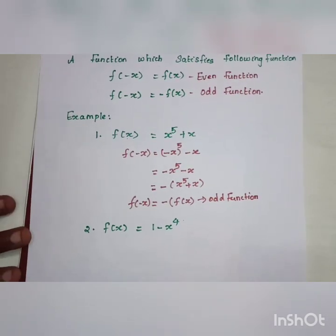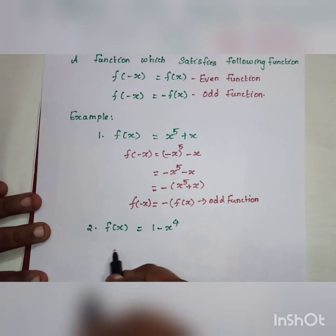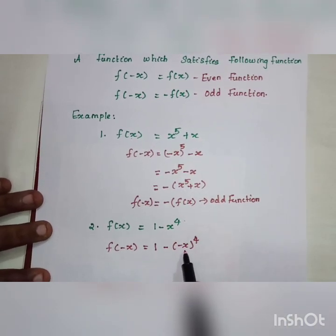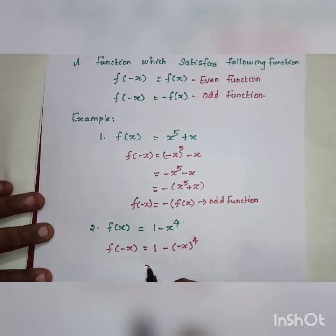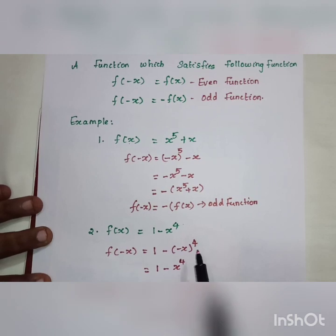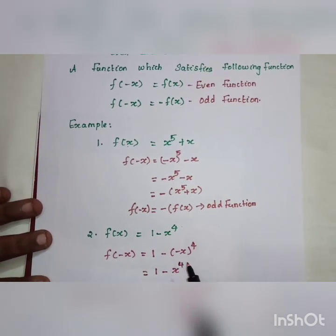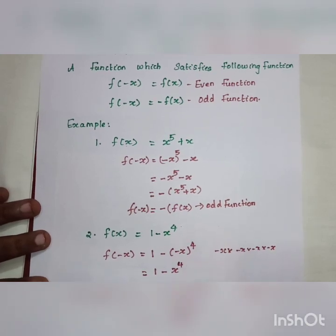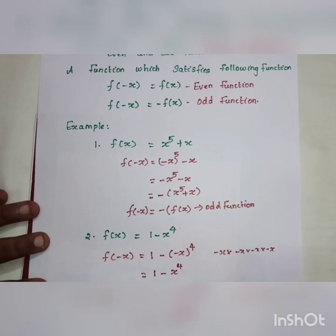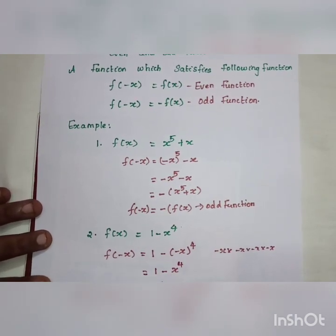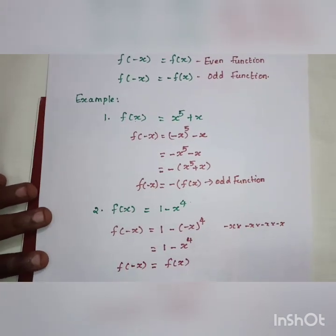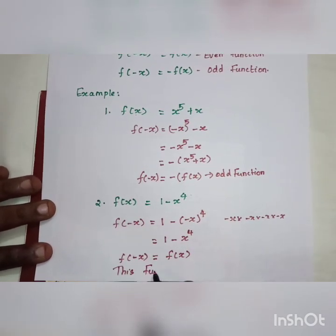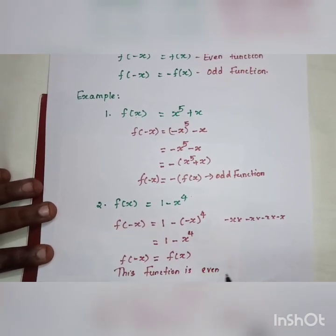For an even function, f(-x) = f(x). Example: f(x) = 1 - x⁴. Substituting -x: f(-x) = 1 - (-x)⁴. Since (-x)⁴ = x⁴ (even power), f(-x) = 1 - x⁴ = f(x). Therefore this function is an even function.